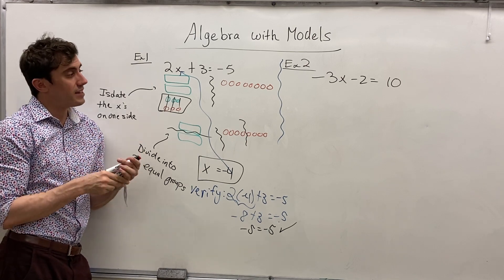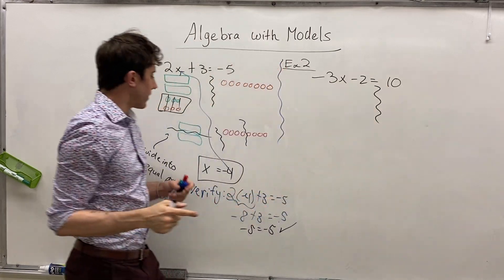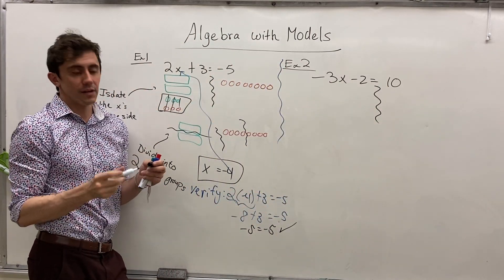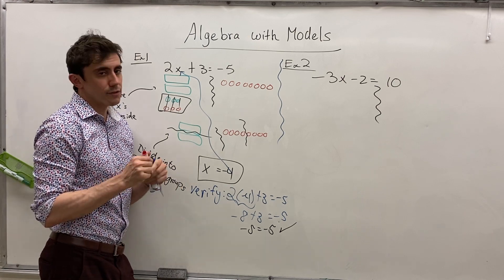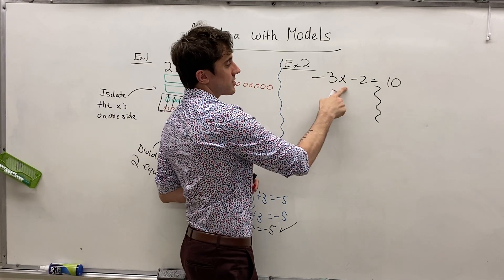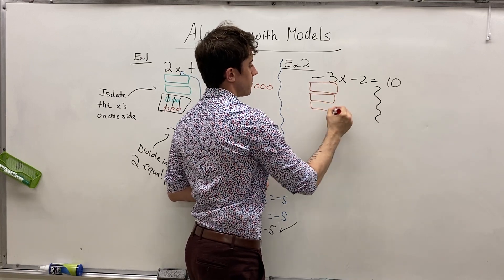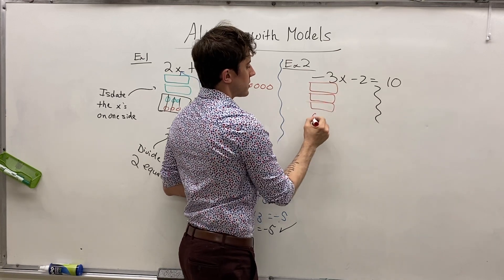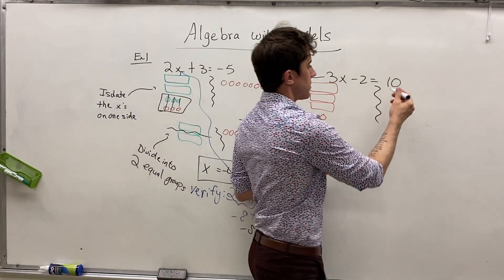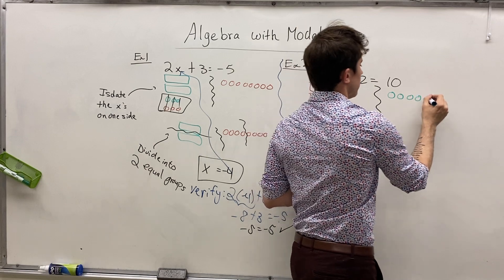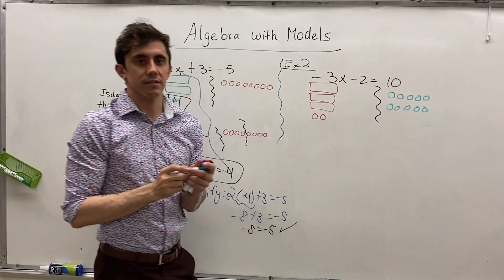Example two is going to be a little bit trickier. We start similarly by drawing a nice clear line down the middle at the equal sign. We're going to start off with negative three x's. Since the x's are negative, we'll have three red rectangles, and we have minus two, so we'll add two red circles. On the other side, we have a positive ten, so we can draw ten green circles.